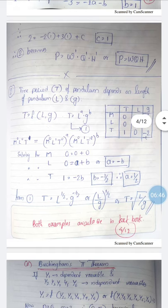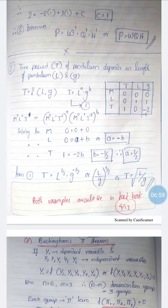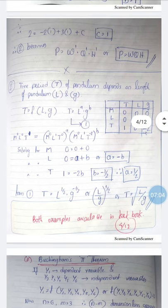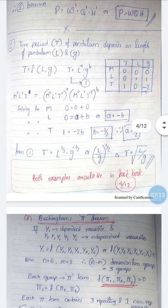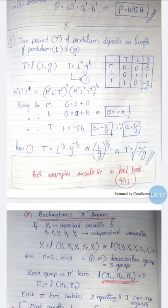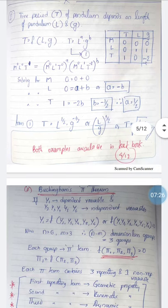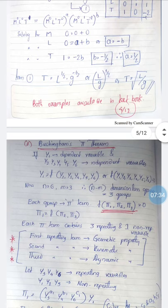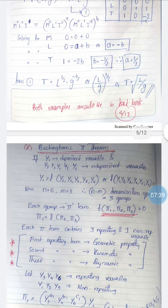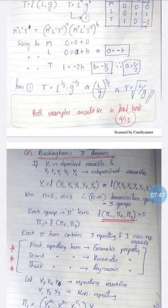The second problem: time period T is a function of length L and acceleration due to gravity g. Writing T = Lᵃ · gᵇ and substituting dimensions — L has dimensions L¹, g has dimensions LT⁻², T has dimensions T¹ — and balancing powers of M, L, and T gives a = −b and b = −½, so a = ½. Therefore T = L^(½) · g^(−½) = √(L/g). Experimentally, we know T = 2π√(L/g), where 2π is a constant from experimentation.